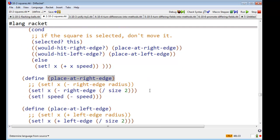So place-at-right-edge is going to be different. It used to say set bang x to be right edge minus radius. Now it's going to say set bang x to be right edge minus half the square, size of the square.